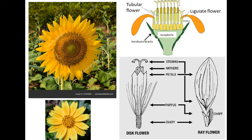The ovary is present. The modified calyx is called the pappus. The petals are present. The anther and bifid stigma are present. This is the basic terminology of family Asteraceae.